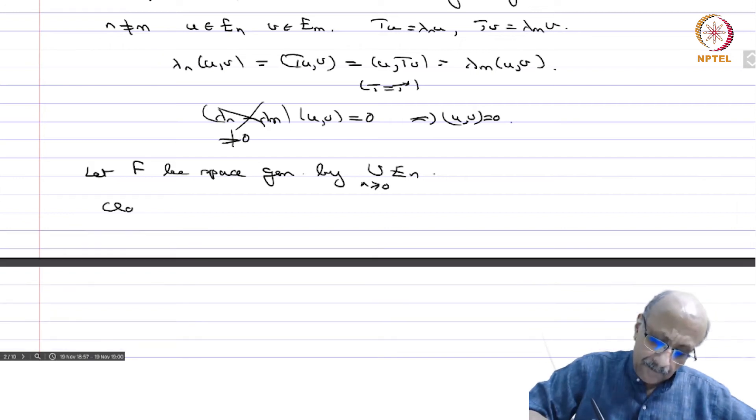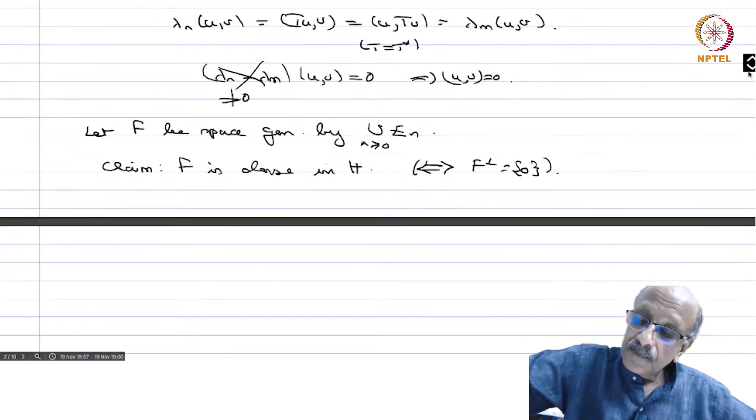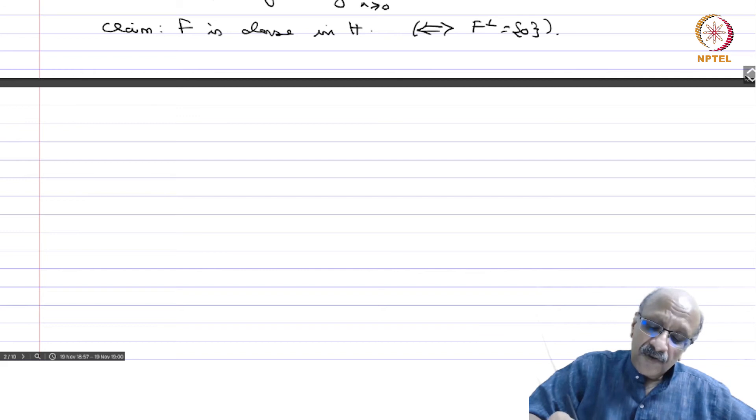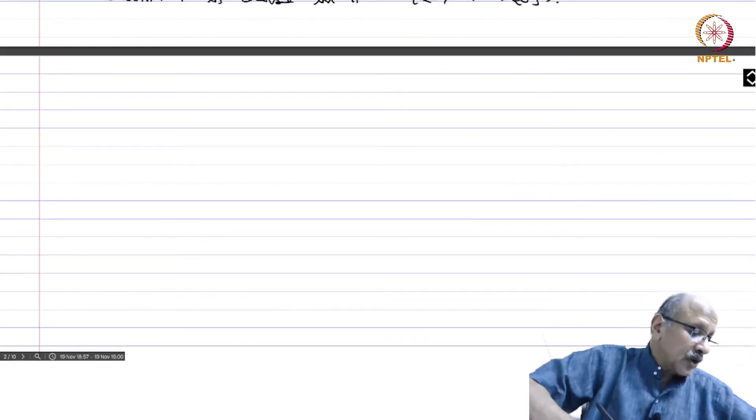Claim: F is dense in H which is equivalent to saying F perp equal to singleton 0. Because if you have a vector vanishing on F then it vanishes everywhere, that is the Hahn-Banach way of showing a space is dense. Therefore showing F perp equal to 0 is equal to showing F is dense.